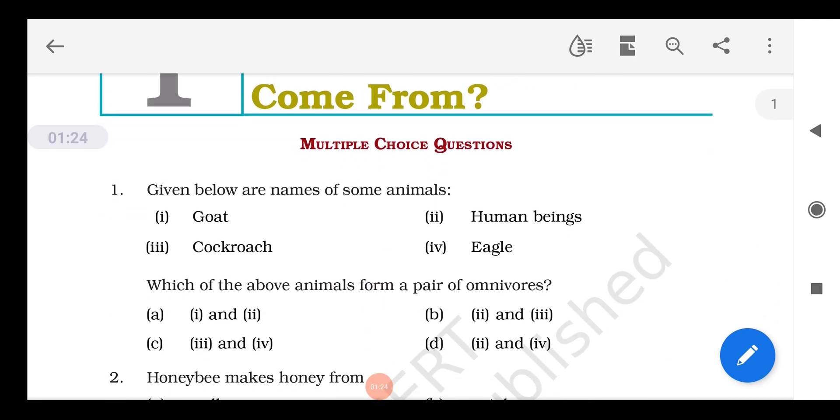Given below are the names of some animals: goat, cockroach, human beings, eagle. Which of above animals form a pair of omnivores? Omnivores are the animals which feed on animals as well as plants for their survival. Goat is herbivore, it feeds only on plants. Eagle feeds only on animals, so it is purely carnivorous. Human beings and cockroach feed on plants as well as animals. So option two and three, option B is the correct one.